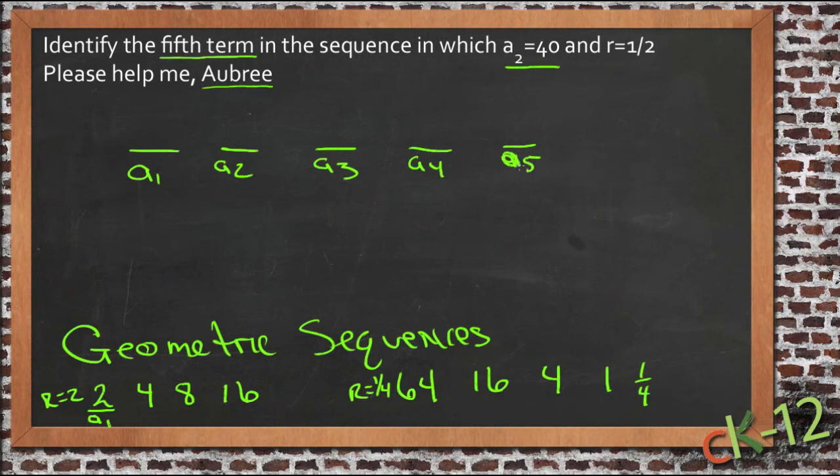And what we're looking for is this one over here, the fifth term. And we know this one right here, this one's 40. And we know that each successive term is multiplied by 1/2, or is half of the term that we're on right now.